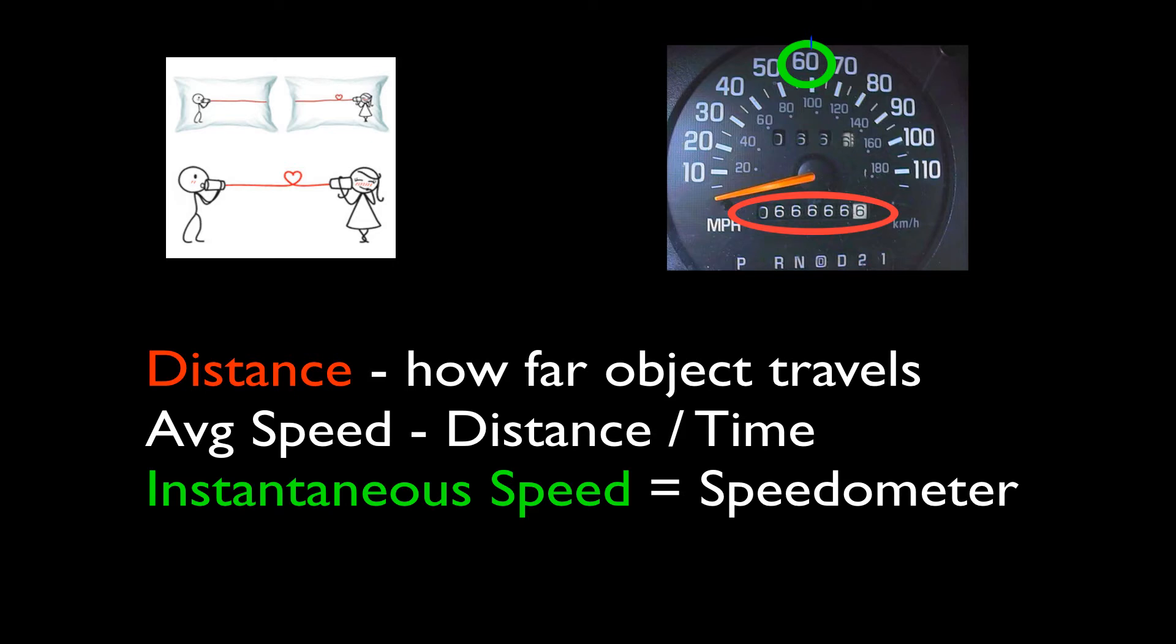We have the average speed, which is where you take the distance and divide it by the time. We also have the instantaneous speed, which is what a car's speedometer reads when you look at it. It doesn't tell you anything about the direction. So these are three important scalar quantities in physics. And again, we mean numbers that have a size or a value, but they don't have any direction.